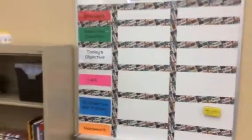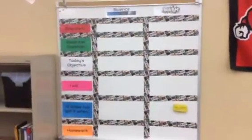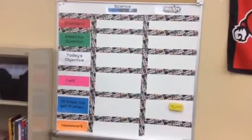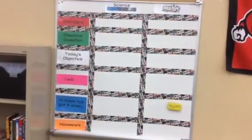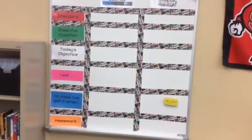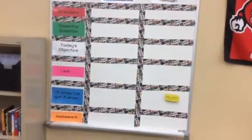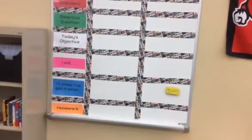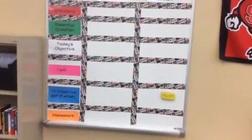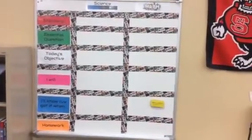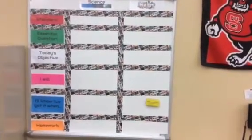One of the most important aspects of the room is this board right here. This is how you know what you're going to be doing each day. You can see the categories going down the left-hand column: the standard, the essential question, the objective for the day. You'll be able to see what you have to accomplish and how you know you've learned what you're supposed to during the day. Homework gets updated every day. The middle column is for science, the far right column is for math.